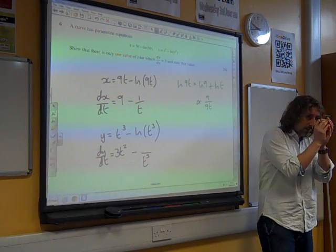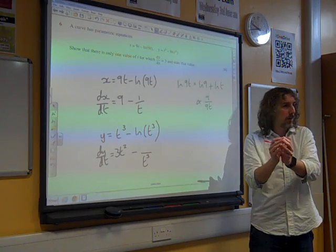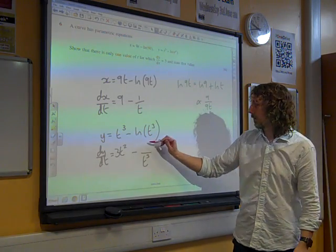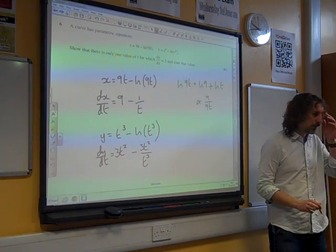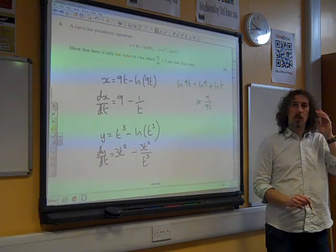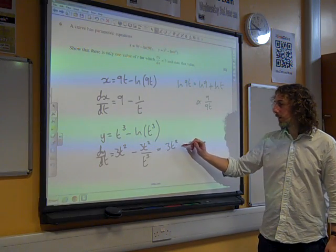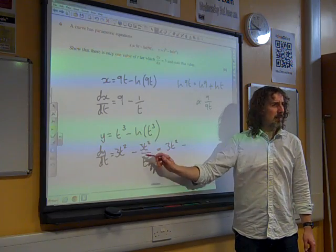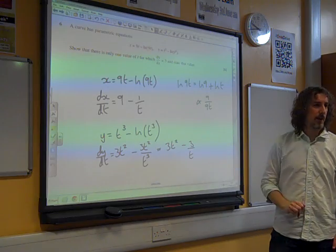Then we multiply by the derivative of the inside bit, which is t cubed, which would give us 3t squared. Which means that actually what we've ended up with - can you see that t squared cancels with the t cubed? So we end up with minus 3 over t.